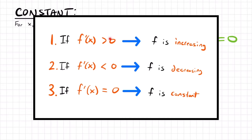If the derivative for a particular interval of a function is greater than 0, that part is increasing. If an interval has a negative slope, that part is decreasing. And if an interval has a slope of 0 — which is very uncommon — that part is constant. We can use these guidelines to describe the behavior of different functions in terms of where they are increasing and decreasing for different intervals.